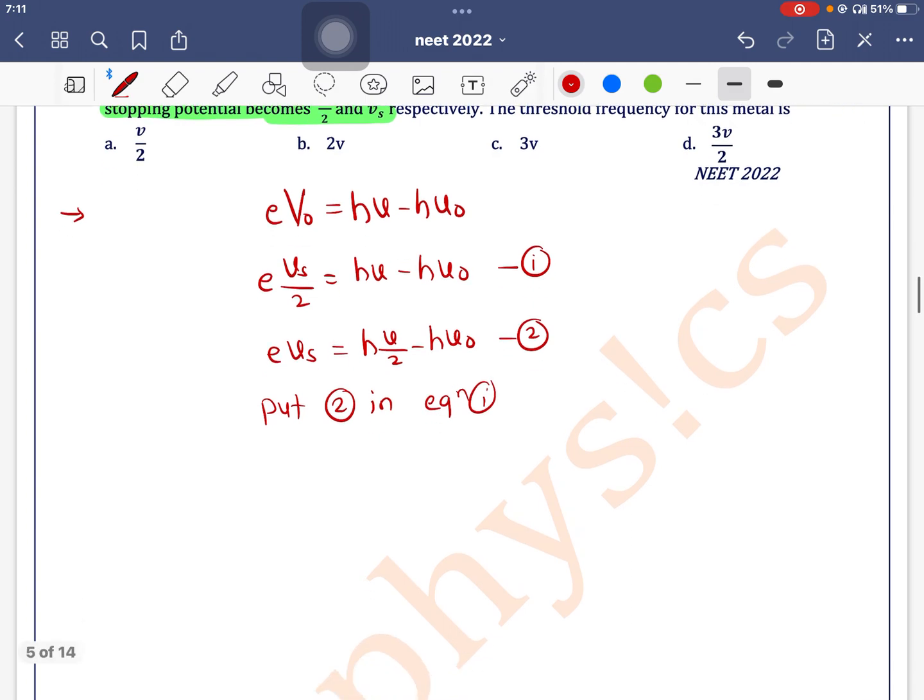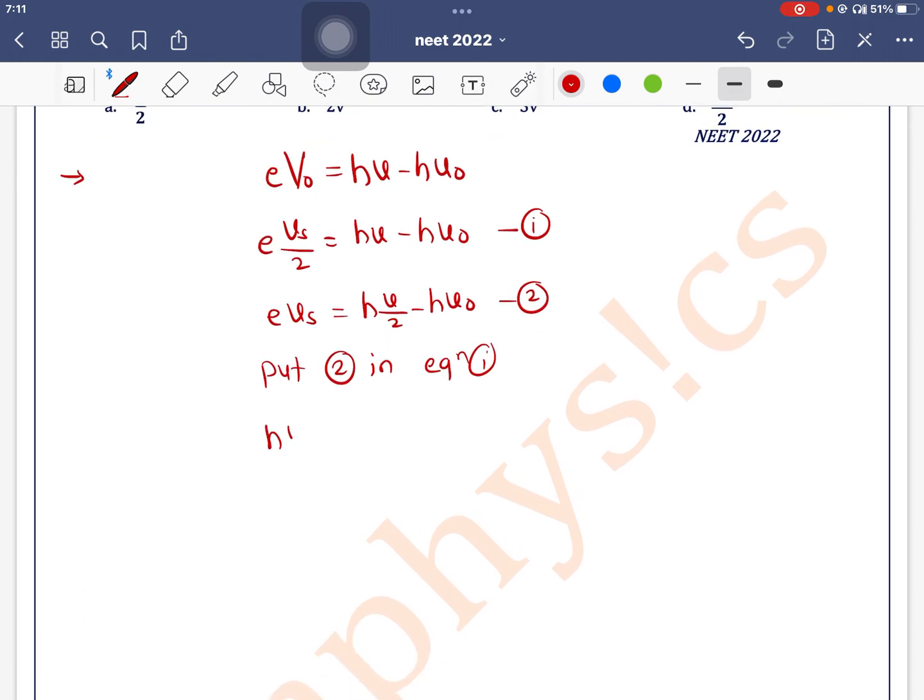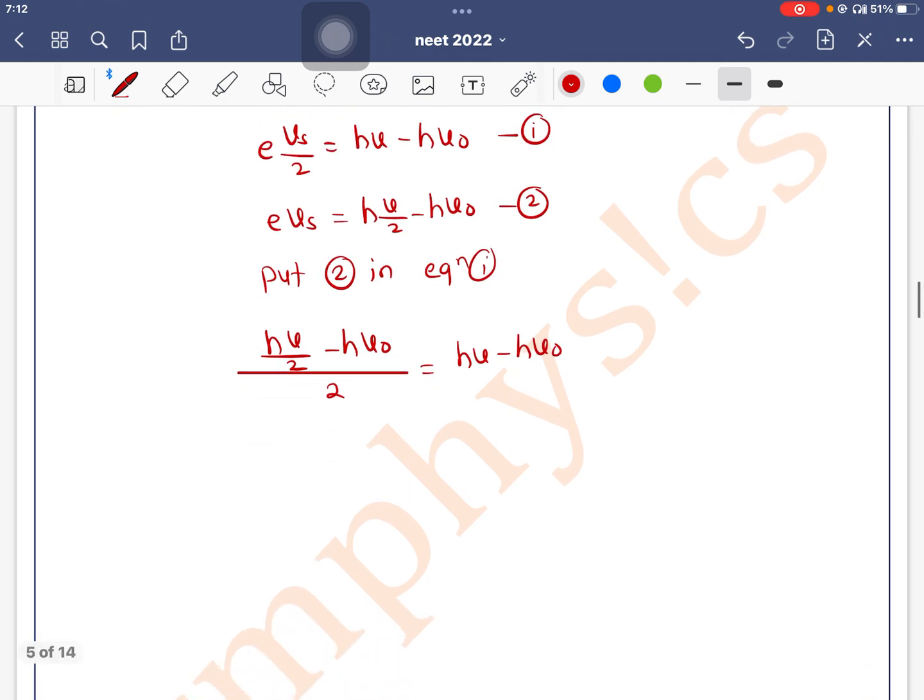So it will become h nu by 2 minus h nu0 divided by 2 equals h nu minus h nu0. See, h gets cancelled out here, so nu by 2 minus nu0 equals 2 nu minus 2 nu0.